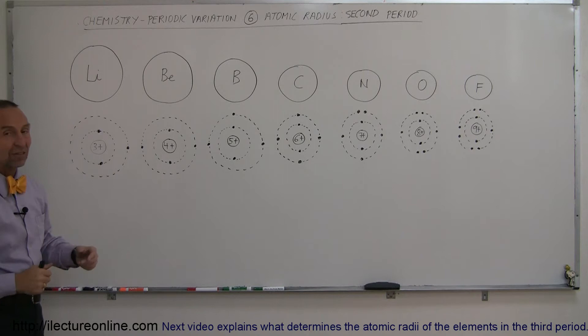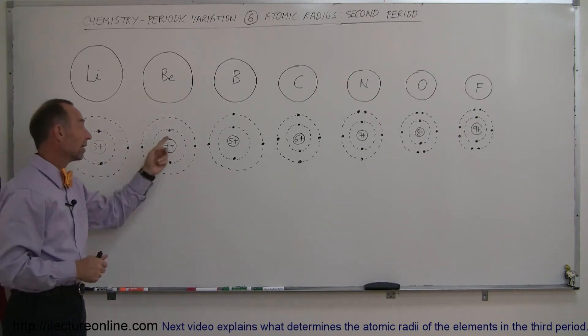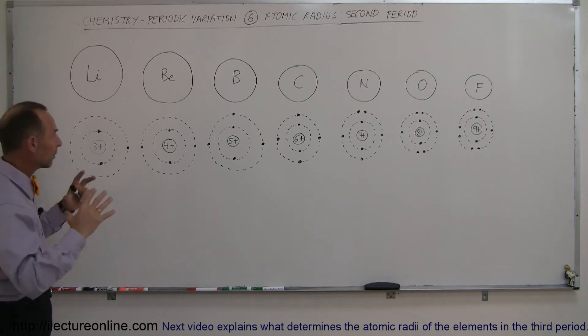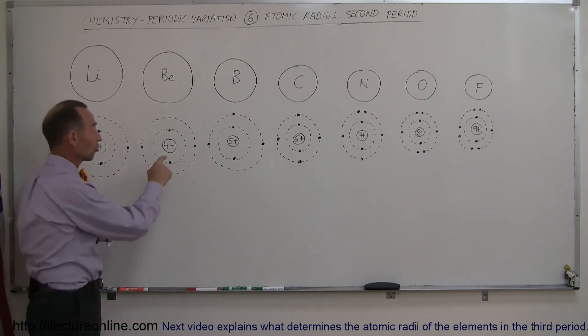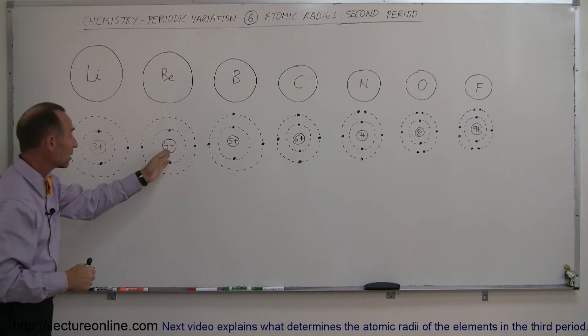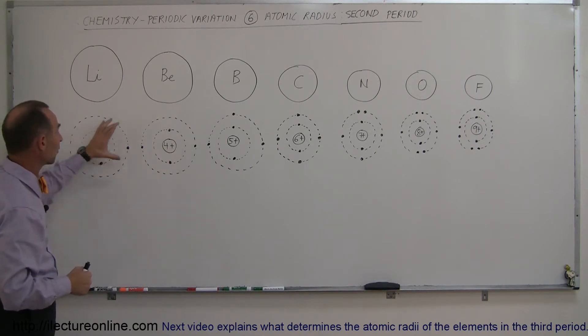When we now go to beryllium, which has an extra charge in the nucleus and the second electron in the second energy level, we find that atom to be quite a bit smaller than lithium. The reason for that is there's a stronger force of attraction, and the screening effect to the nucleus for the two outer electrons is no different here than it is here because it's the same number of electrons screening out the nucleus, only two.